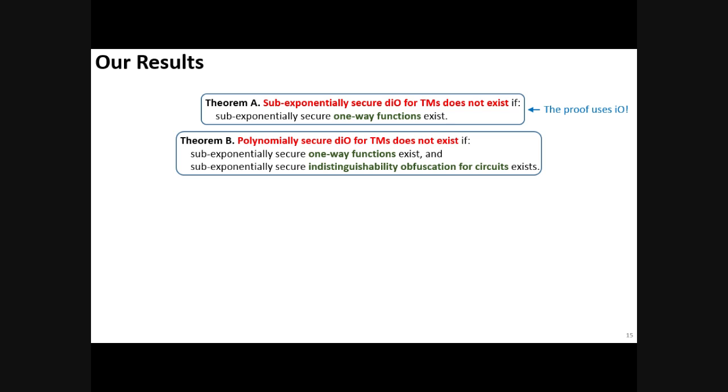we show that sub-exponentially secure differing input obfuscation for Turing machines does not exist if sub-exponentially secure one-way functions exist. Secondly, polynomially secure DIO for Turing machines doesn't exist if sub-exponentially secure one-way functions and sub-exponentially secure indistinguishability obfuscation for circuits exists.